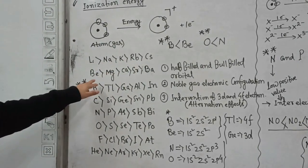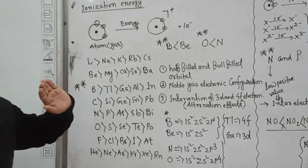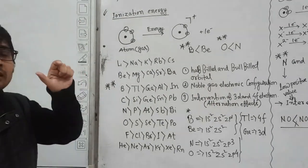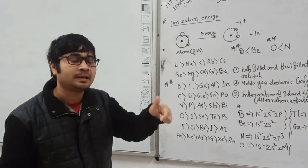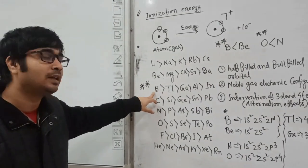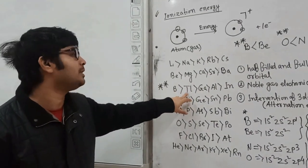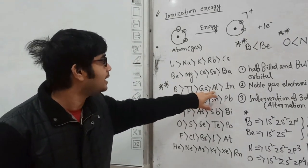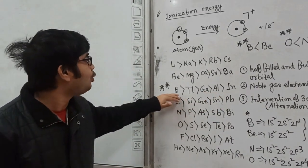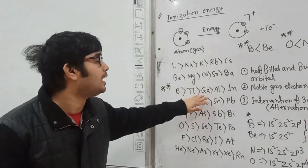But there is one anomaly when it comes to the Group 13 elements. Boron has the highest ionization energy, but instead of aluminium being next, thallium comes next, then gallium, then aluminium, and at the end indium. We are going to explain why this trend is followed in ionization energy.